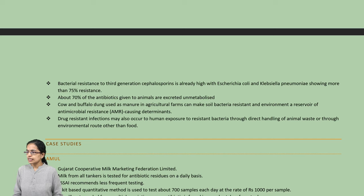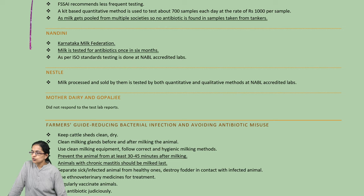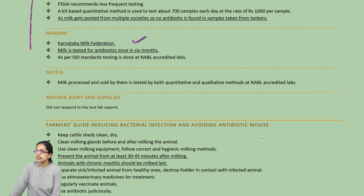Cow and buffalo dung used as manure has brought in a reservoir of antimicrobial resistance-causing determinants into the system. Various case studies are being done. For example, Nandini, a milk federation from Karnataka, tests milk once every six months. Some dairies like Mother Dairy and Gopalji have not responded to the testing initiative.